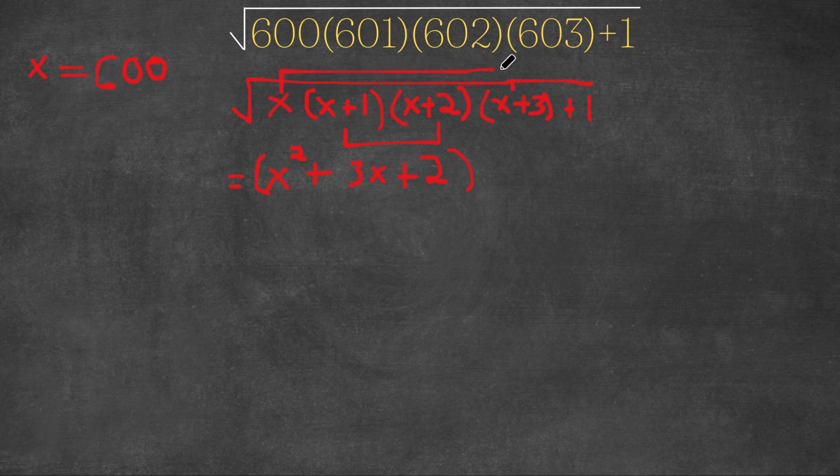And we're also going to multiply x and x plus 3. So x times x plus 3, well, x times x is x squared, and x times 3 is 3x. So we have x squared plus 3x. And this is going to be in parentheses, and we obviously have our plus 1 at the end. Now, this can also be changed to x squared plus 3x in parentheses plus 2 on the outside.